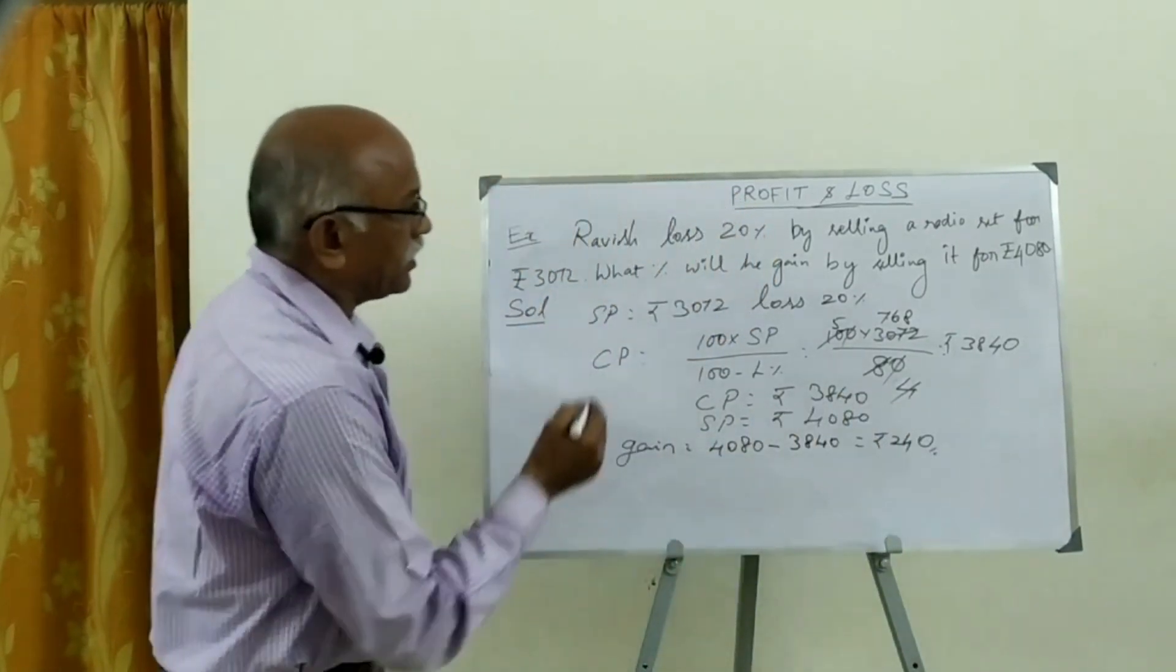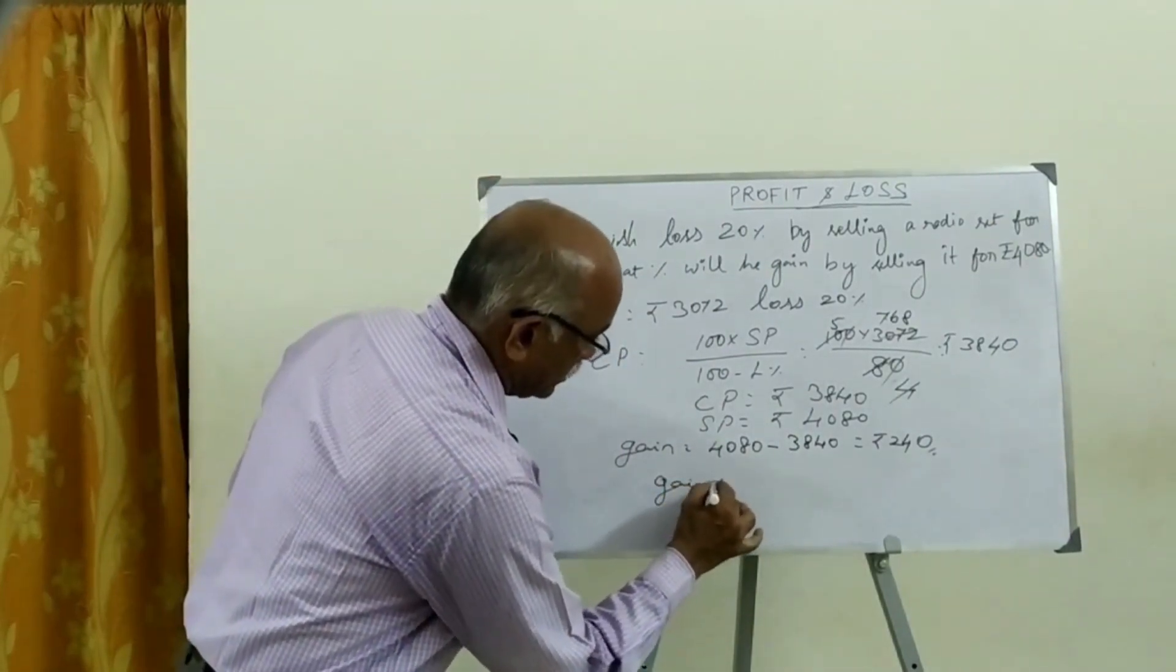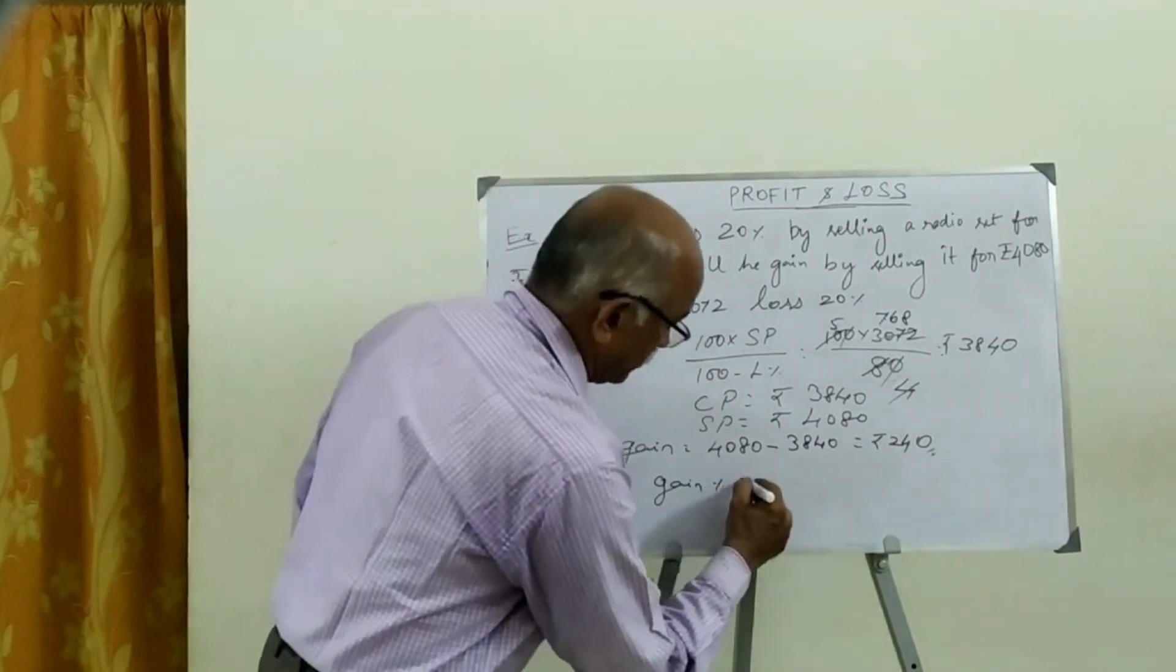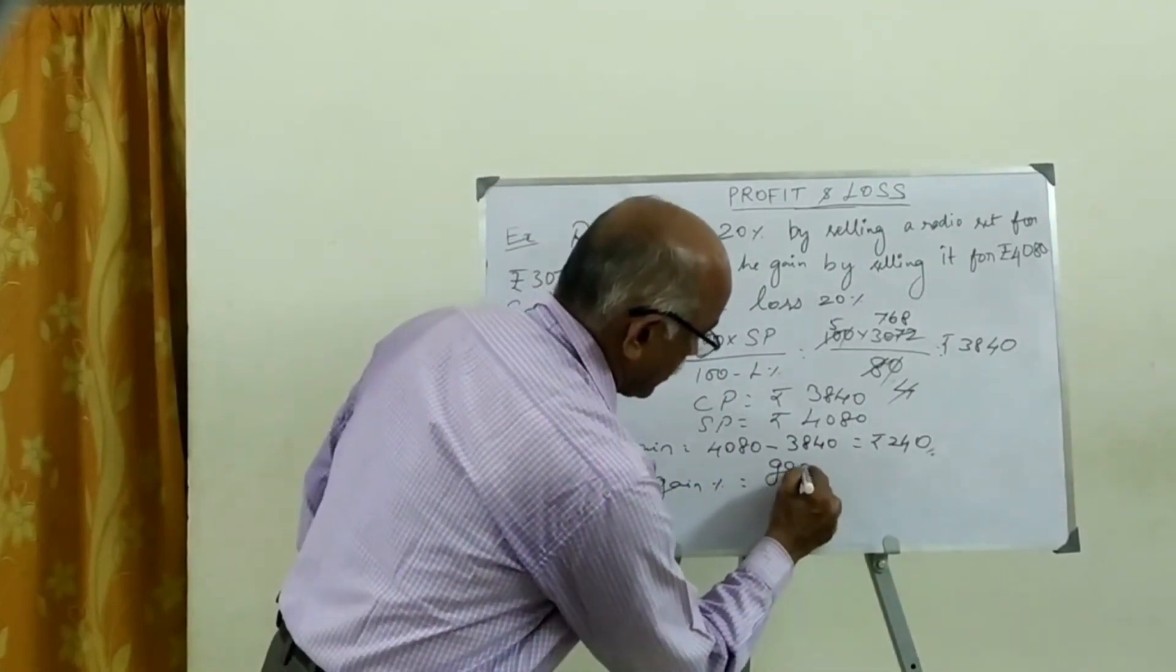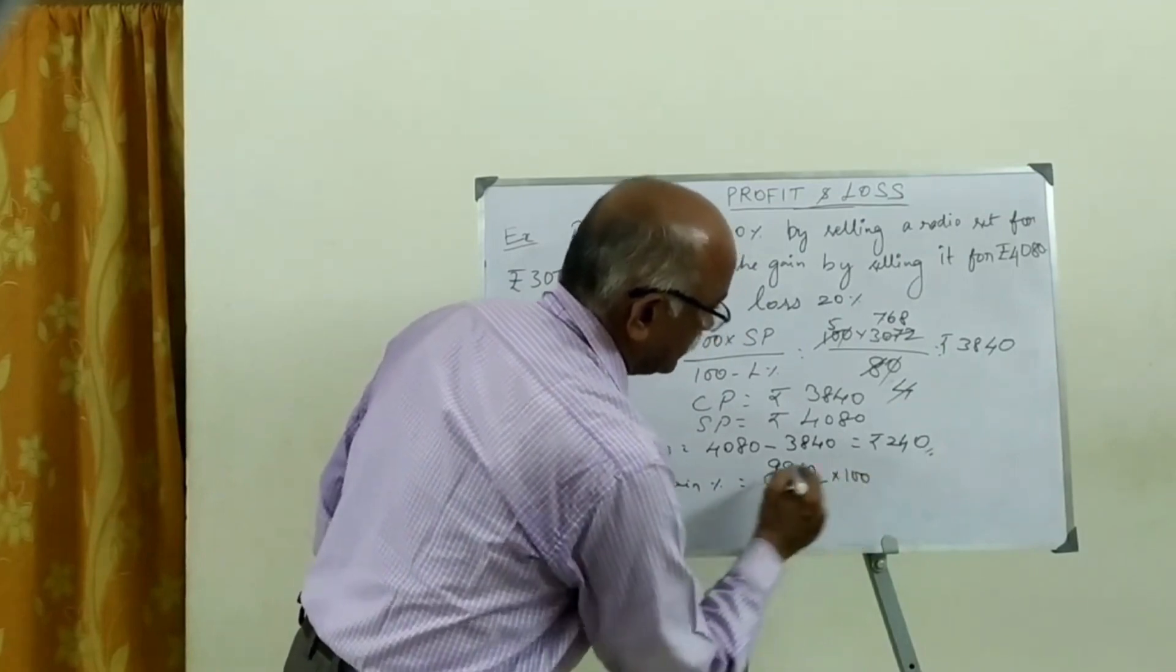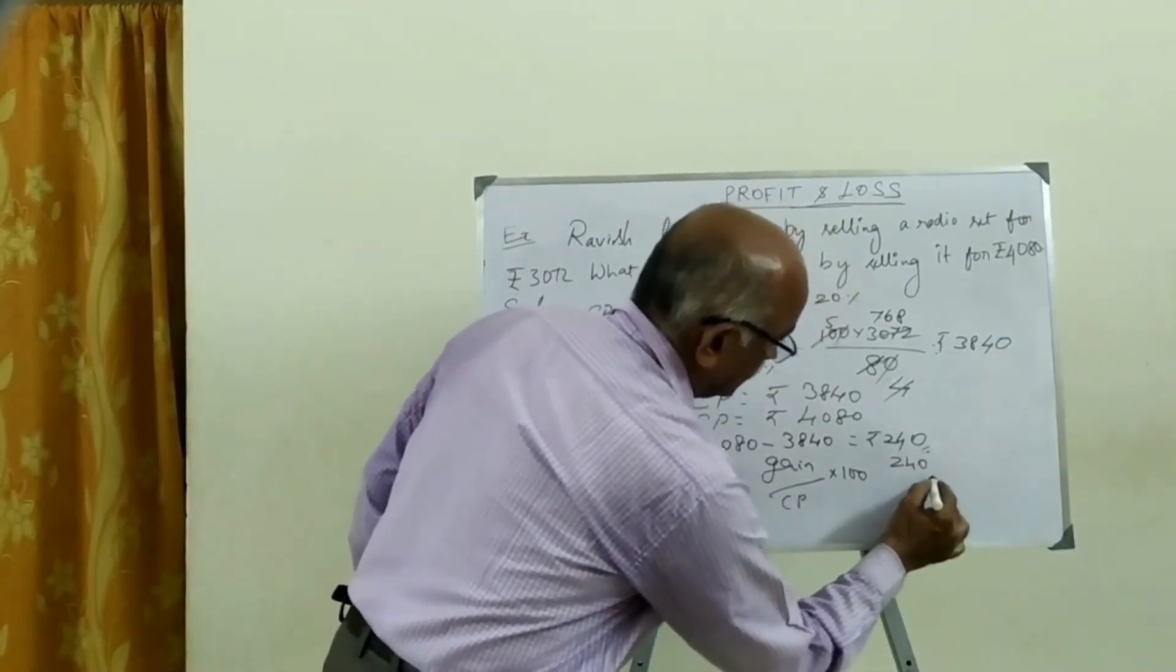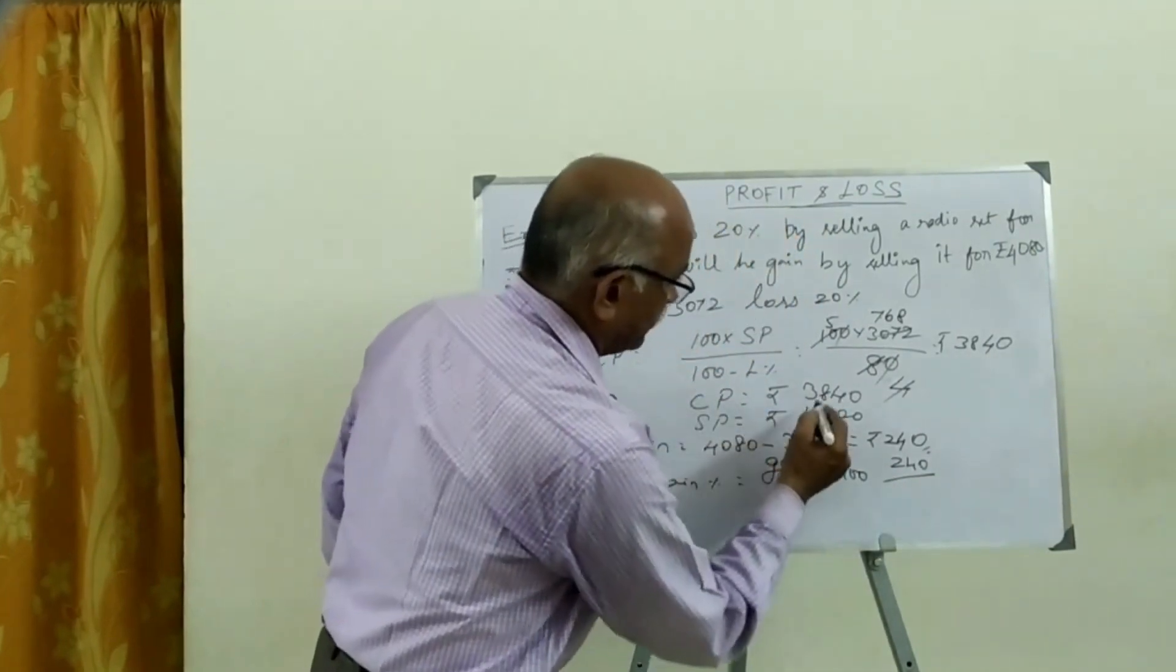This is gain. What is the gain? Gain percentage. This formula is gain divided by CP times 100. Gain percentage.